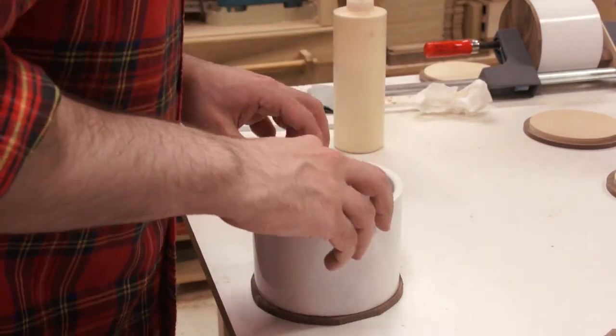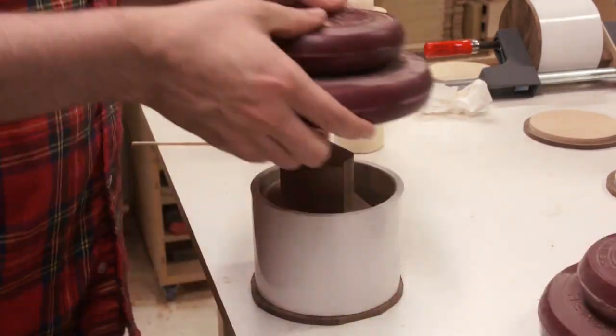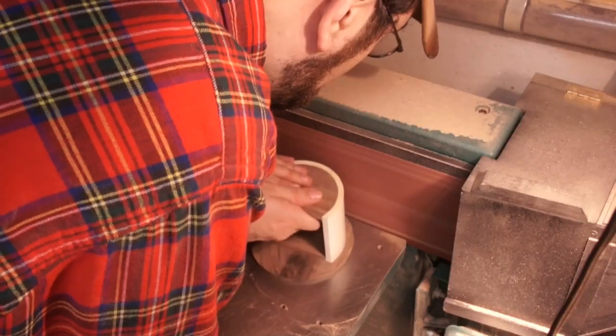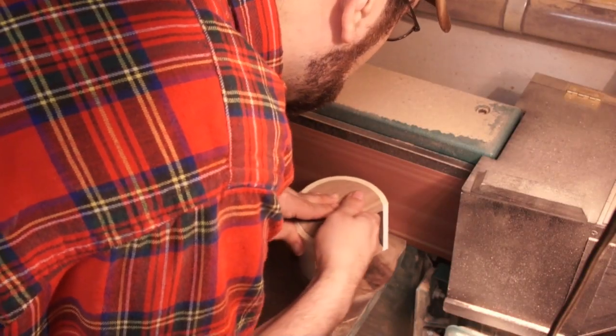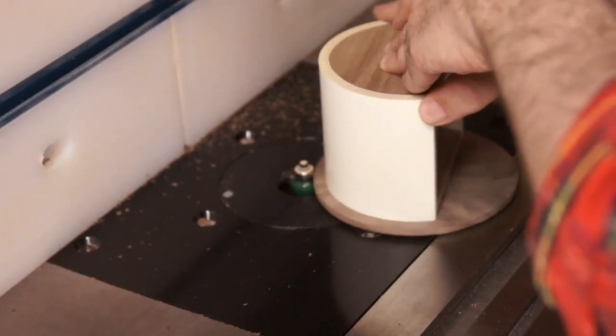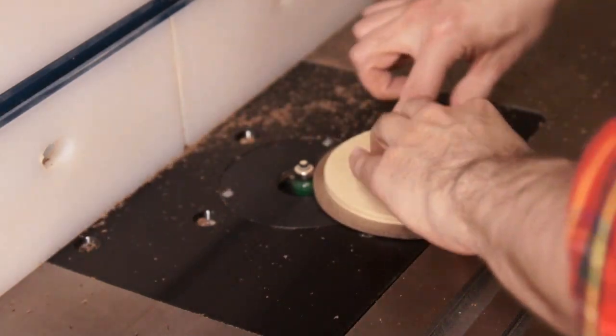I couldn't use the flush trim bit on the front because the drawer isn't held in place tightly, so I had to sand that to fit. And then I rounded over both the front and the back.